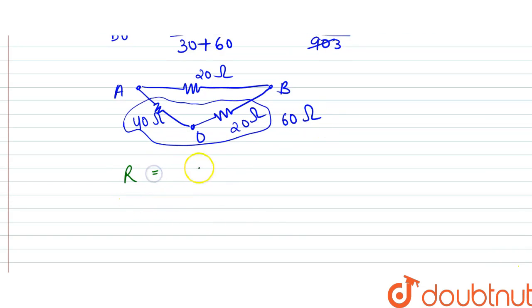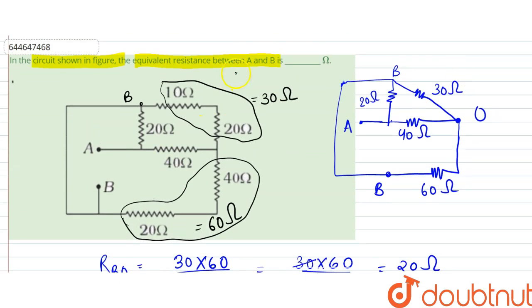So the final resistance, equivalent resistance, will be equal to 20 into 60 divided by 20 plus 60, so that is 80. So this divided by 4, so this will be 15 ohms. So our equivalent resistance between A and B is 15 ohms. So that is our answer.